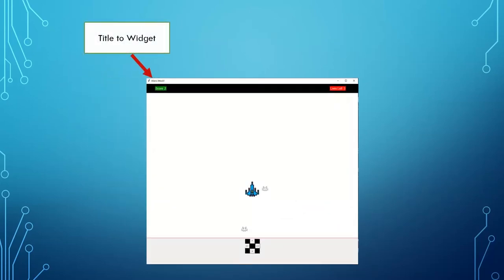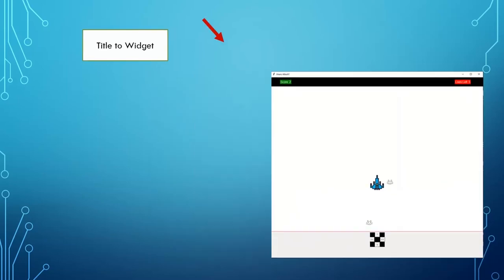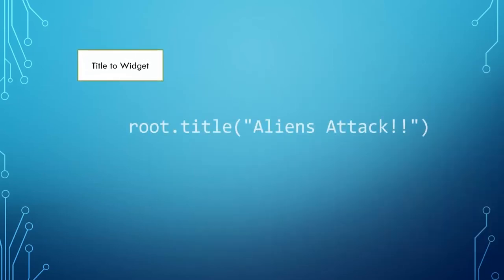It will also have a title widget, and this is how we program it: root.title with open brackets, then 'Aliens Attack'.